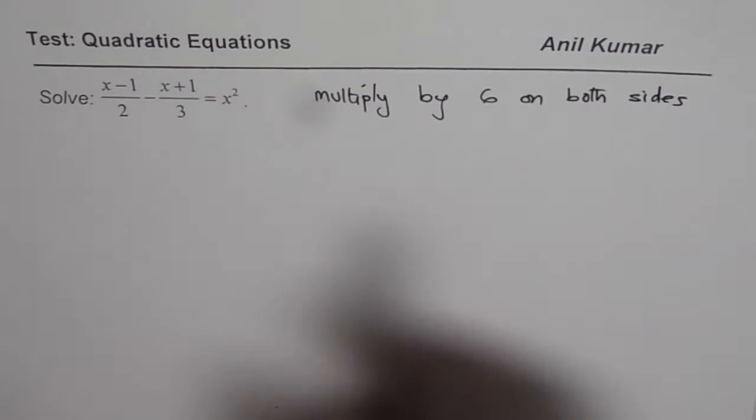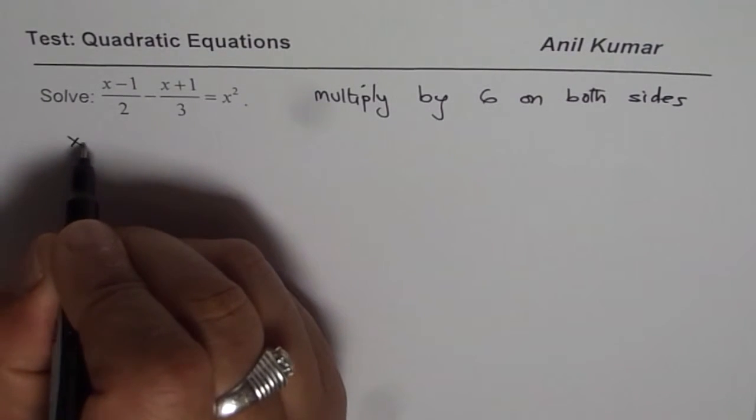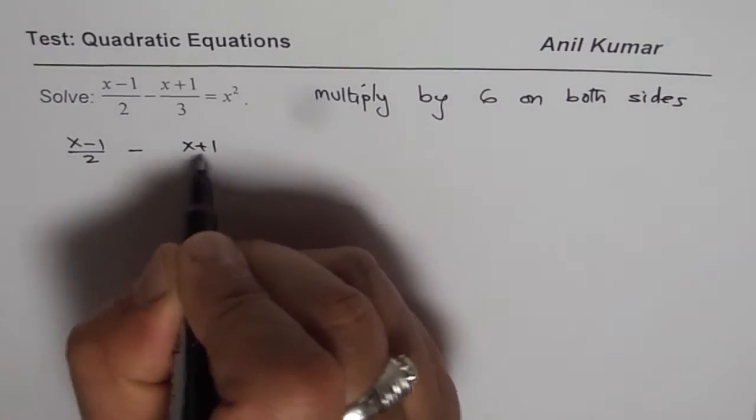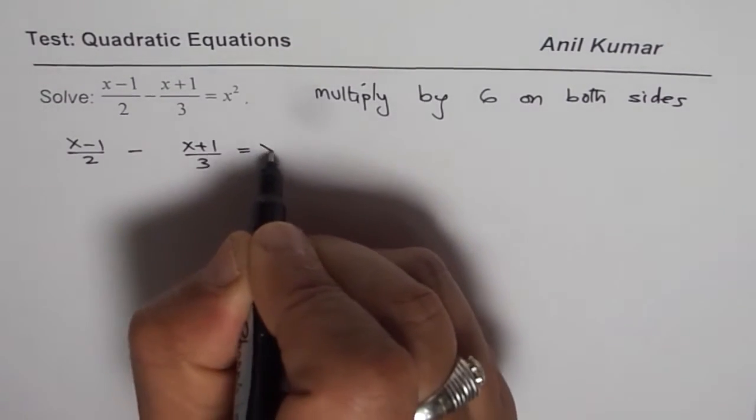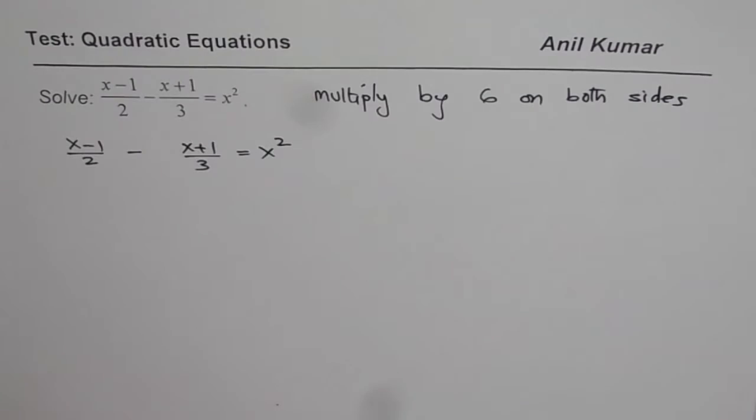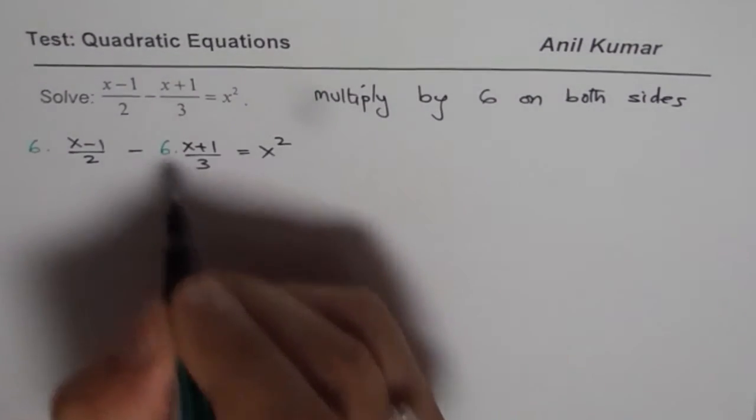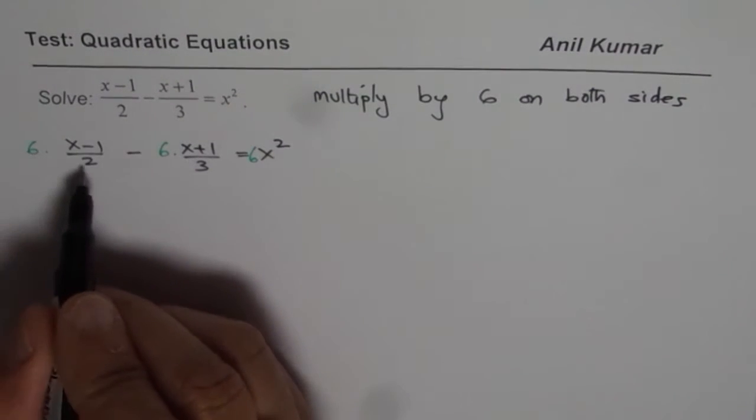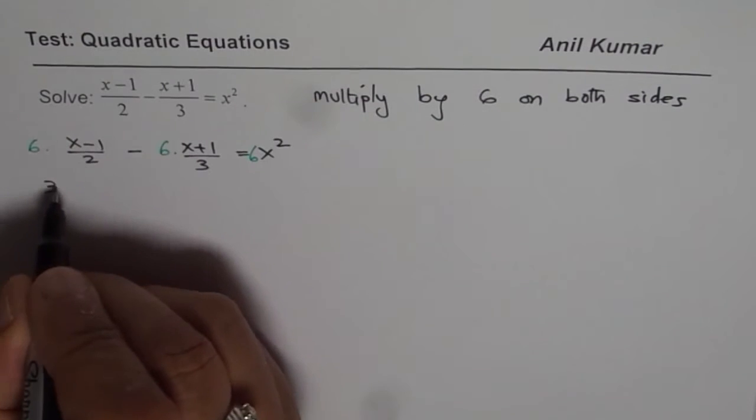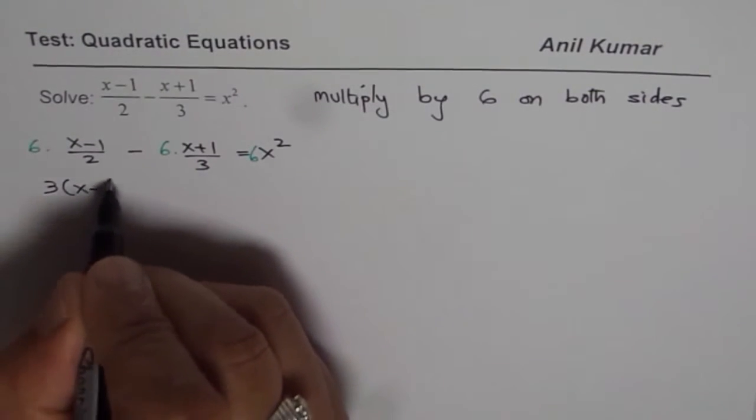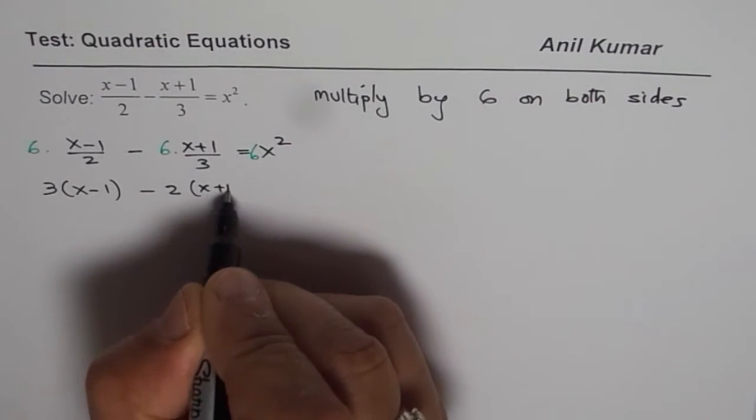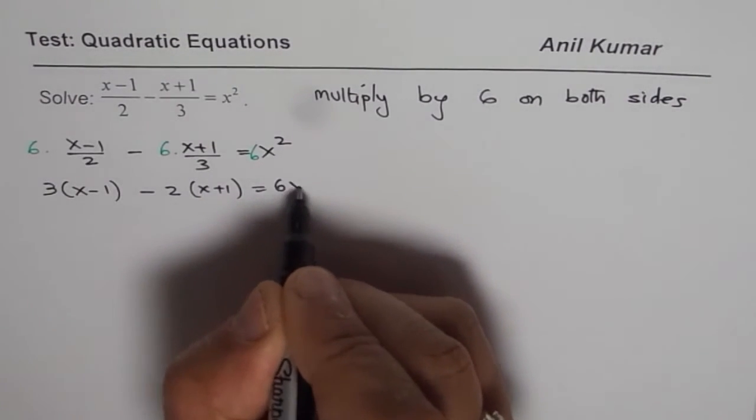So if I do that, what do I get? I have the equation (x - 1)/2 - (x + 1)/3 = x². When I multiply by 6, 6 divided by 2 is 3, so I get 3(x - 1). Here 6 divided by 3 is 2, so we get 2(x + 1), and here we get 6x².